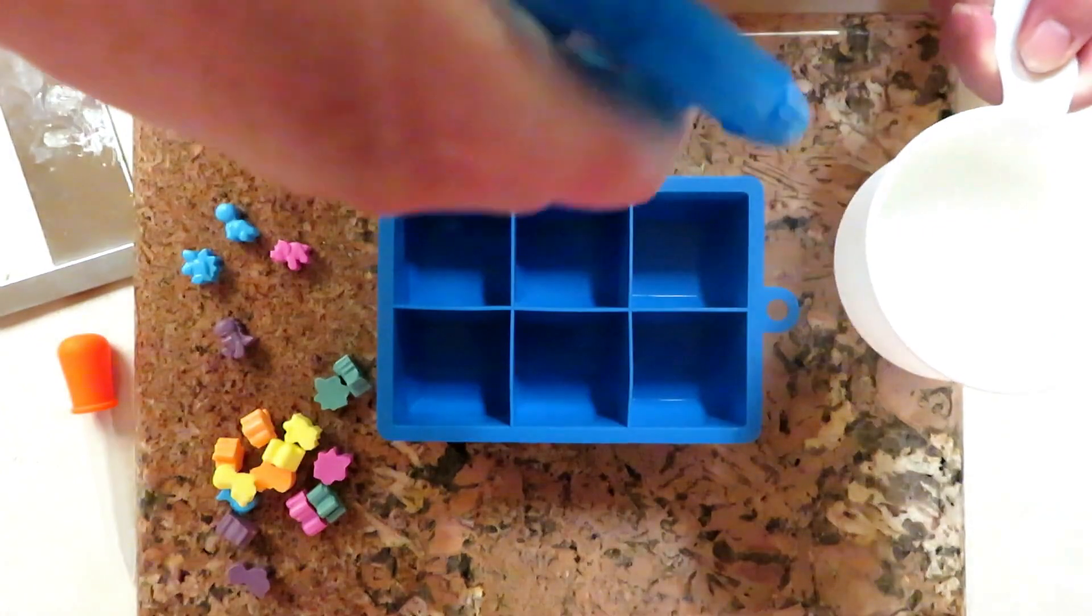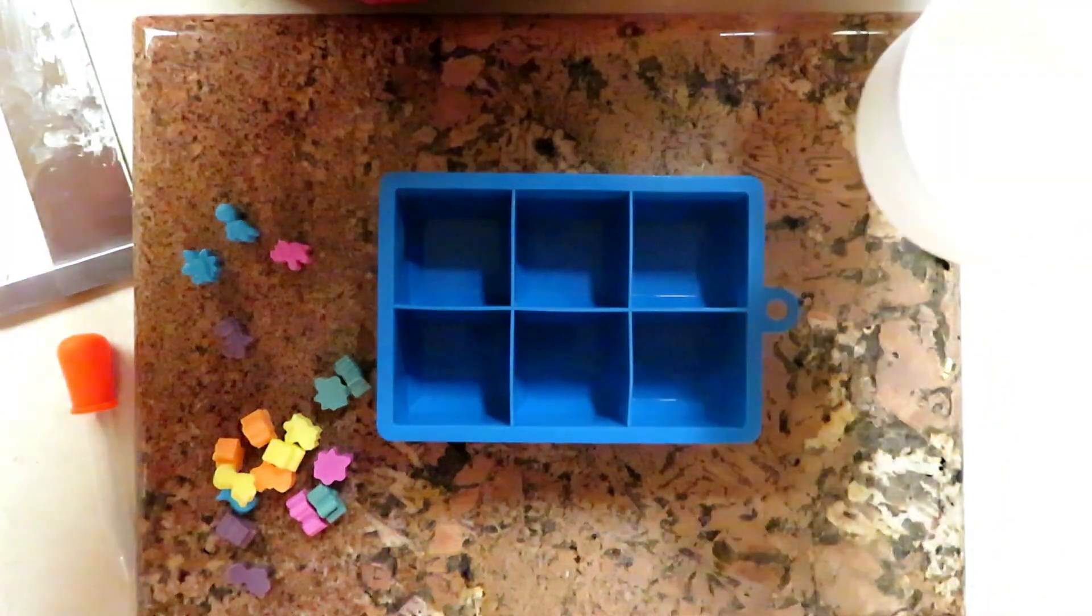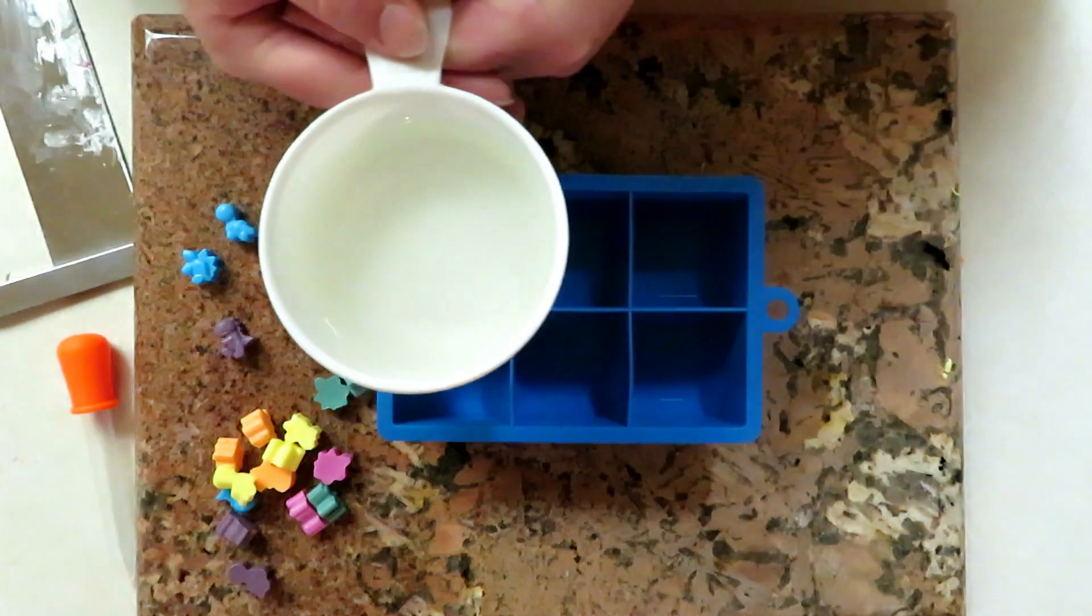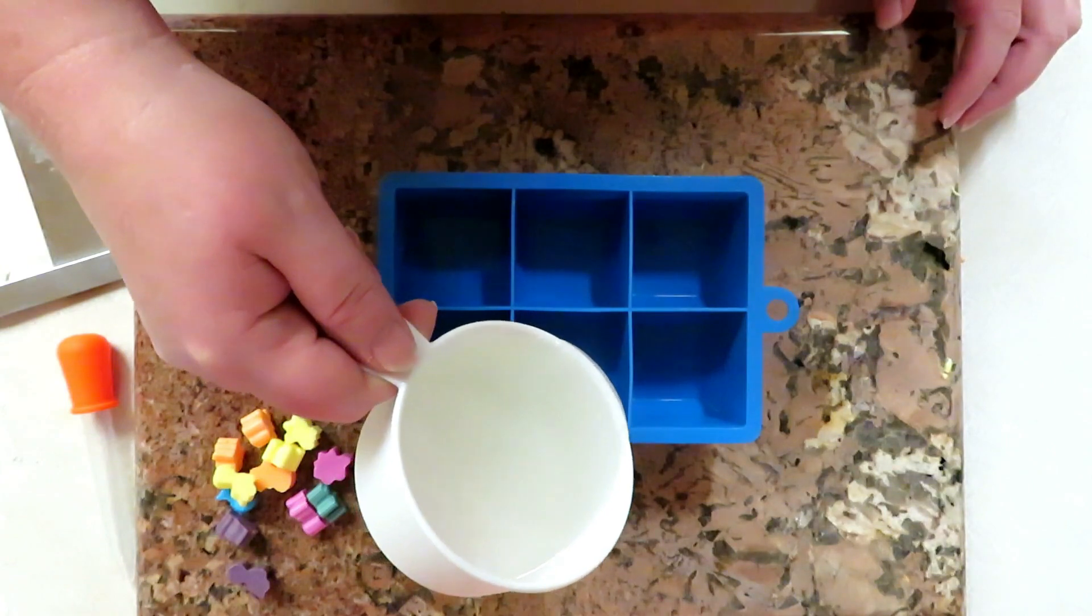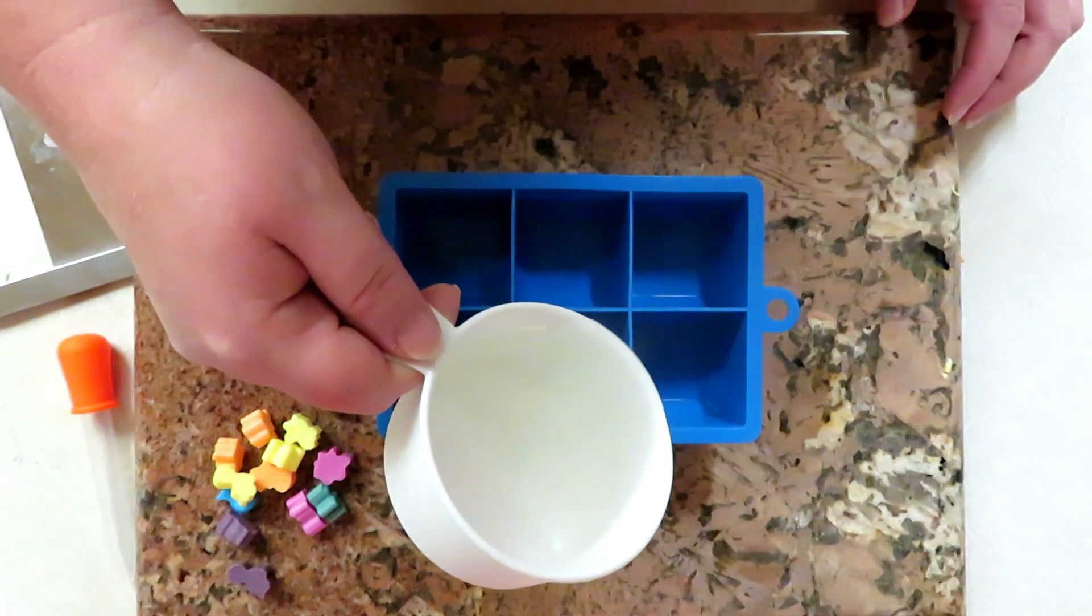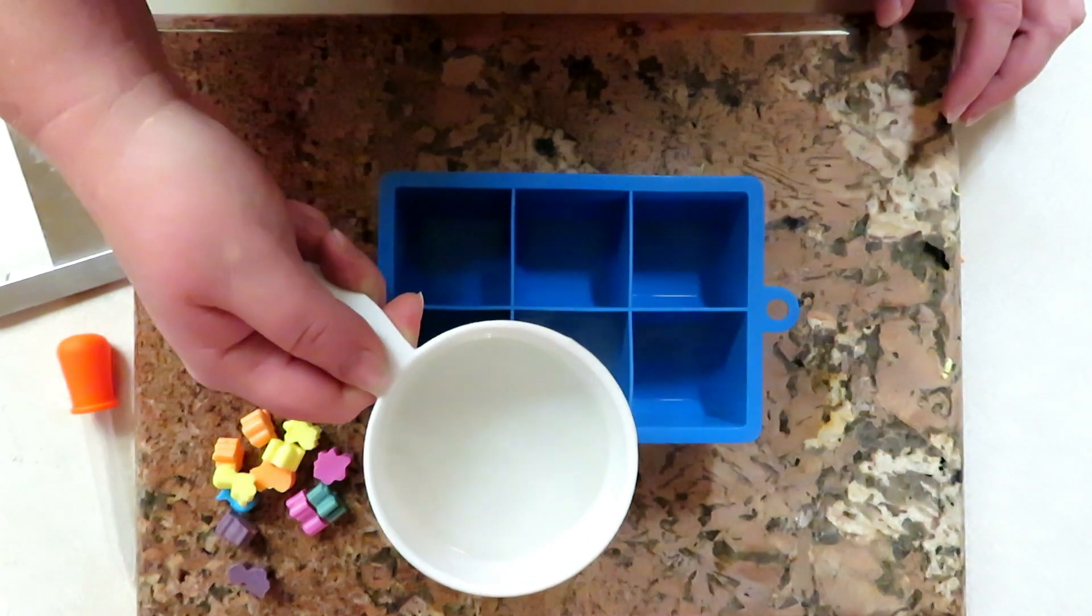I'm gonna spray with a little bit of rubbing alcohol to get rid of the bubbles and let's go ahead and pour a little bit on the bottom here just to get that going. This soap is pretty hot right now so I gotta wait for it to cool just a little bit.